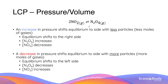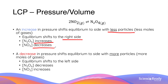Using the same equation, let's look at how we can apply Le Châtelier's Principle when it comes to pressure and volume. An increase in pressure will shift the equilibrium to the side with less particles or less moles of gases. This is because when the system has less particles, the pressure of the system decreases, which is the opposite to the increase in pressure. So in this example, the equilibrium will shift towards the right side, and as a result, the concentration of N₂O₄ will increase and the concentration of nitrogen dioxide will decrease.